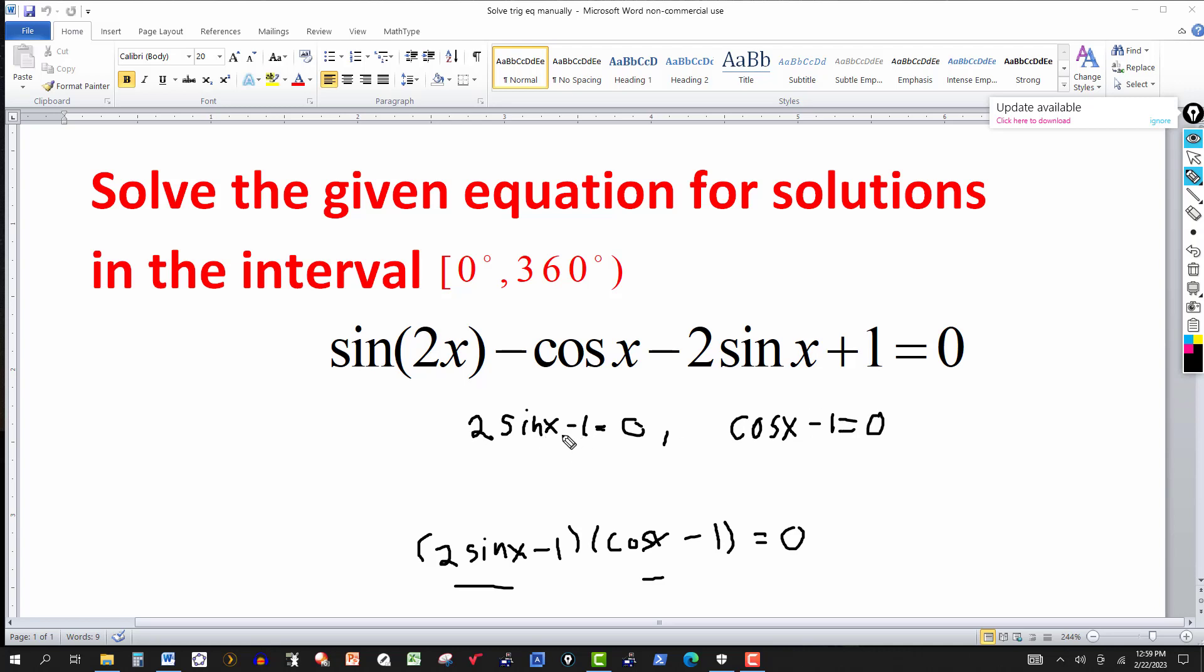And then you solve each of these for the function. So the first factor, I'm going to solve it for sine of x. So sine of x, taking the minus one over, that'll be one, and then divide by two, I get sine of x is equal to one half.